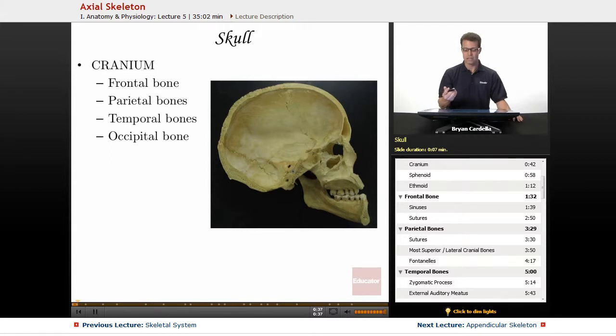So we're going to start with the skull at the most superior portion of the axial skeleton. The cranium is all of this business right here. And that includes the frontal bone, the parietal bones, the temporal bones, the occipital bone.